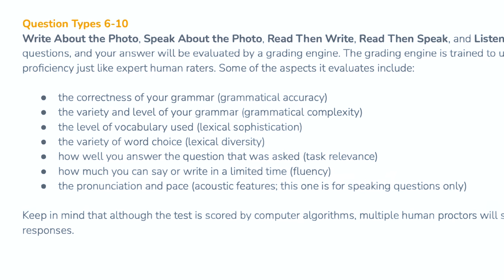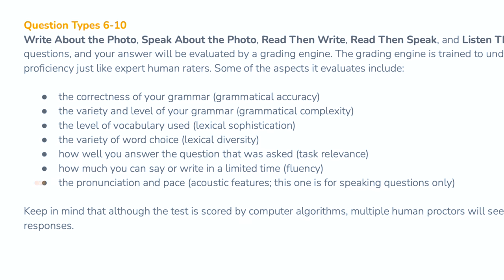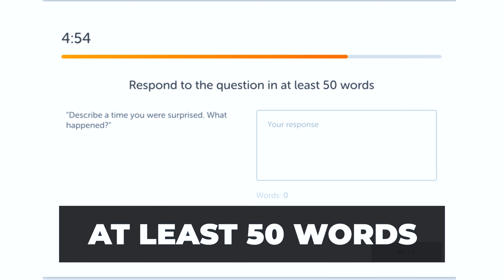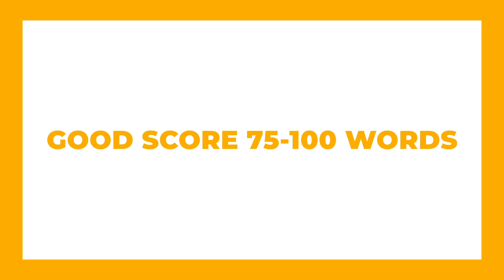An issue I see a lot with my students is that they don't actually write or speak enough. If you look at the scoring criteria, fluency is part of the criteria and what they are assessing is how much you can write or speak in a limited time. For the writing question, the minimum is 50 words, but if you want a really good score you should be aiming for anywhere between 75 to 100 words. Of course if you can write more that's great, but I recommend 75 to 100 words.